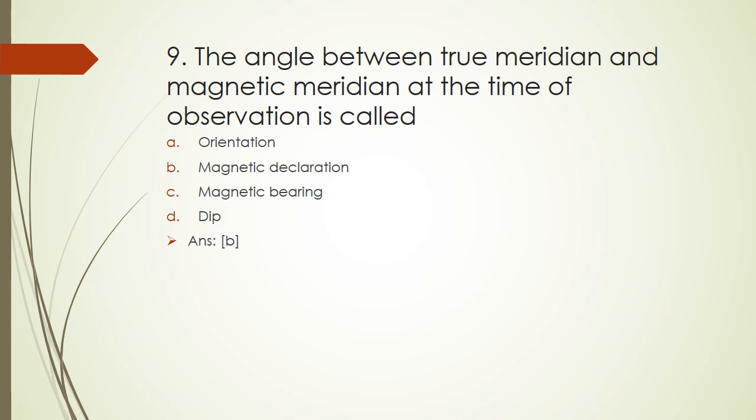Question 9: The angle between the true meridian and the magnetic meridian at the time of observation is called: orientation, magnetic declination, magnetic bearing, or dip. The right answer is magnetic declination.